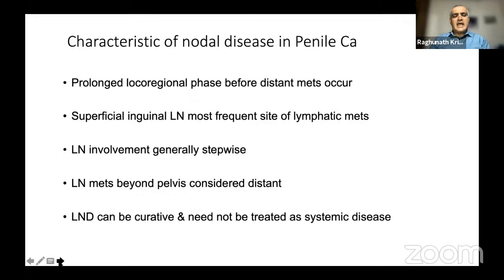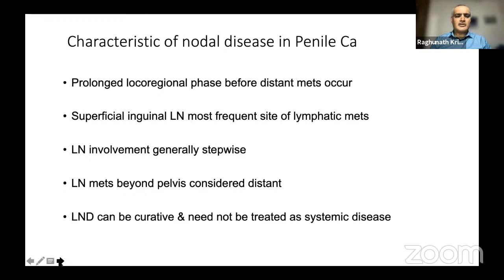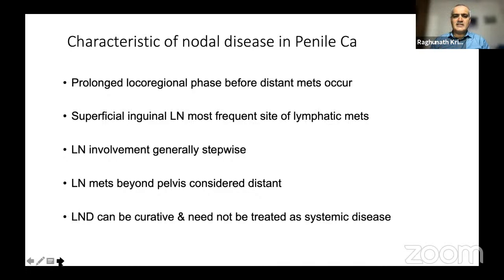Coming to the introduction: the characteristic of nodal disease in penile carcinoma is very interesting. It has a prolonged loco-regional phase before distant metastasis. A patient with T1 or T2 stage disease can have microscopic disease which is not even palpable. From that stage it becomes palpable, still confined to the inguinal region. Then it goes to the deeper inguinal nodes, then to the pelvic nodes — probably by then they can throw metastasis.